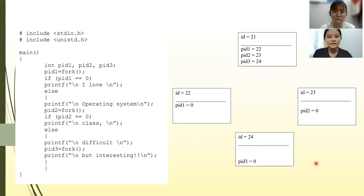Then, we move to ID equals to 22. At ID equals to 22, PID1 equals to 0, and it enters if-else condition. While PID2 and PID3 are both equal to 0, due to no process being created.